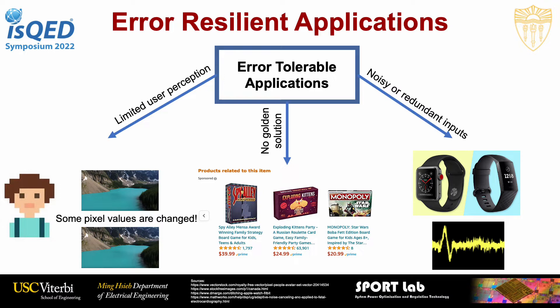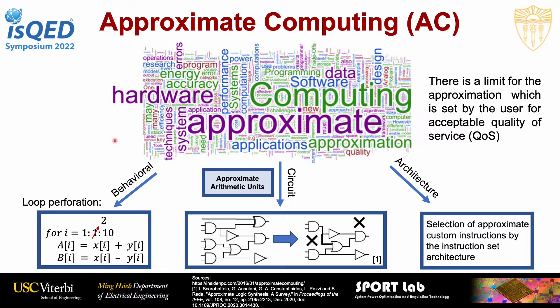Considering the error resiliency of the mentioned applications, one solution to energy efficiency is the use of approximate computing. Approximate computing is a new design paradigm which abandons exactness in computation in favor of improvements in energy efficiency. It can be applied at different levels of the design abstraction, for example at behavioral level, architecture level, and circuit level. One example for circuit level approximation is that given an exact netlist of a circuit, we can simplify it by removing some of its gates. An important application of approximation at circuit level is the use of approximate arithmetic units, such as approximate adders and multipliers.